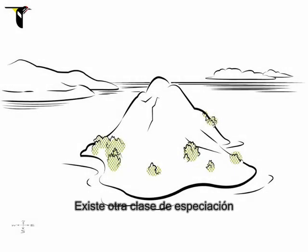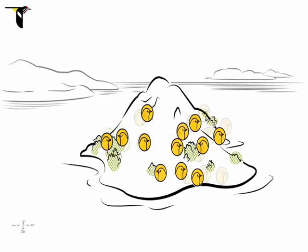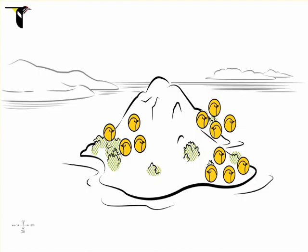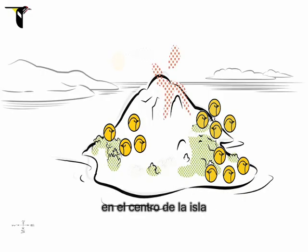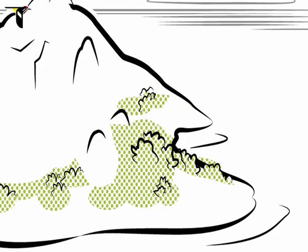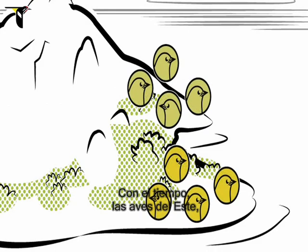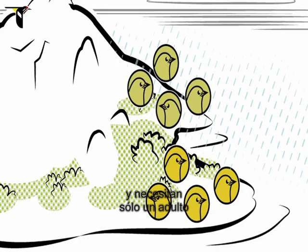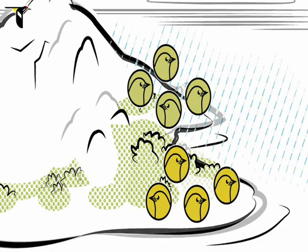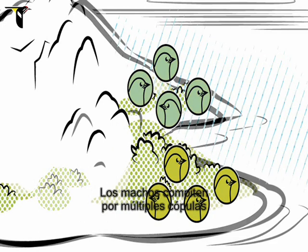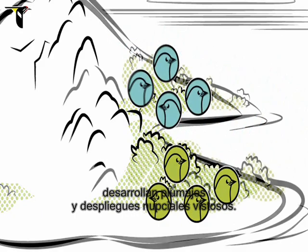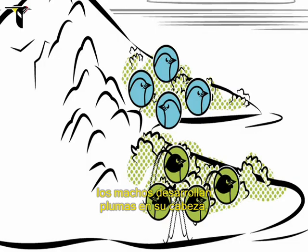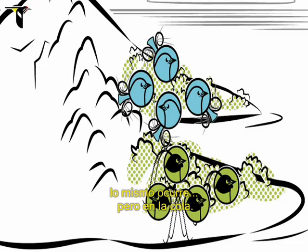But there is another kind of speciation that can occur when a habitat becomes divided and a once widespread bird population becomes fragmented. Imagine that our new island grows larger over time, and the volcano develops a central mountain ridge while a valley forms along the eastern coast. Over time, the eastern birds, who have plentiful fruit resources and only need a single parent to successfully raise young, evolve specialized mating systems. Males compete for multiple mates, and to get noticed, evolve fancy plumage and display behaviors. On one side of the valley, the males evolve elaborate head plumes, and on the other, it's the tails that get fancy.